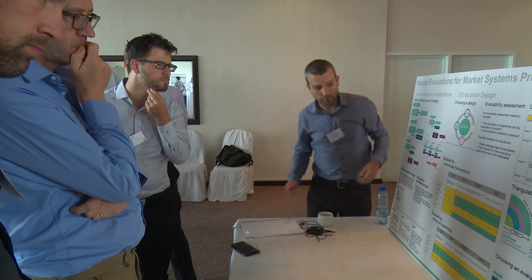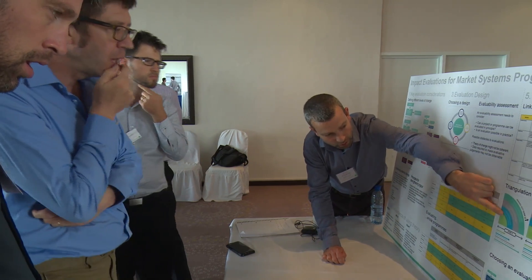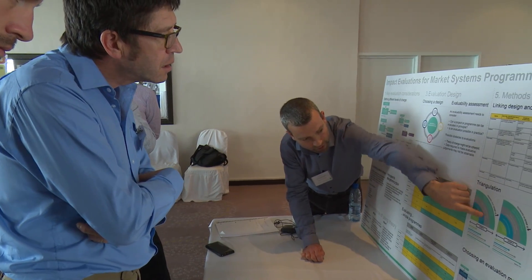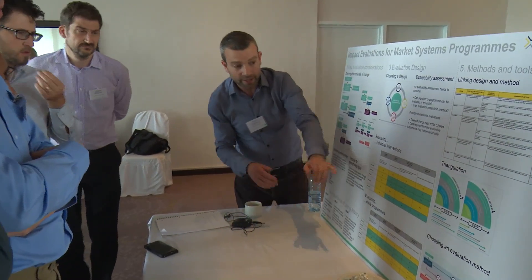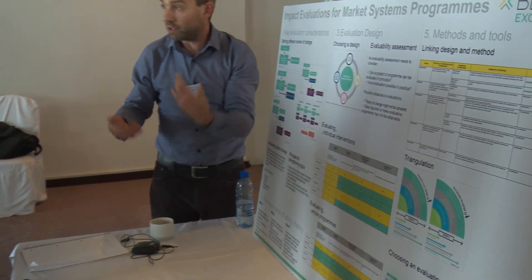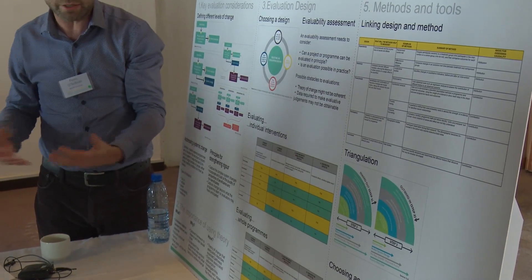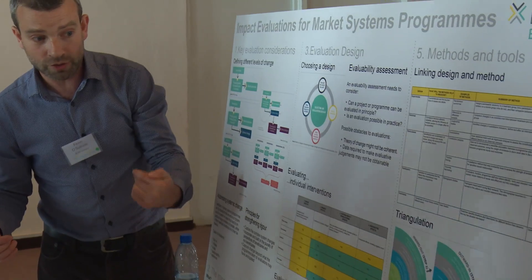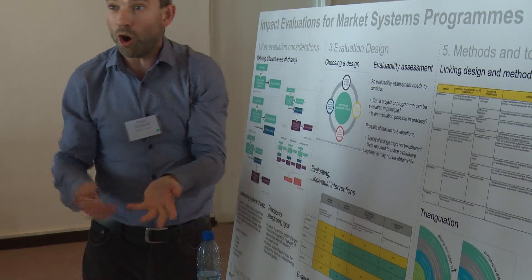The point of that diagram is that it comes originally from the Springfield model. You start with your intervention, then you hope you get system change, and then you hope that provides growth and then poverty reduction. One way of triangulating is you start from your intervention and try to follow it out - you see what the intervention has been doing, you talk to people in the market system, a range of different actors, and you get a perspective on what's changing. But you also want to take a different point of view, which is starting at the market system as a whole.